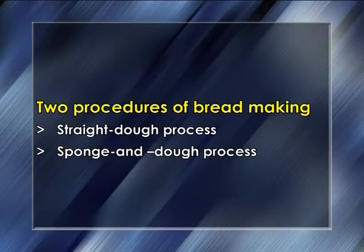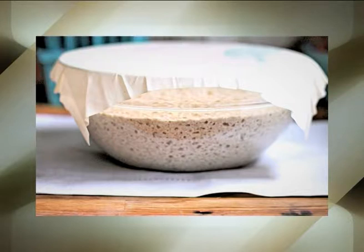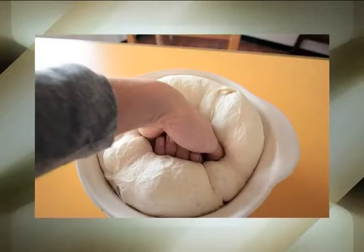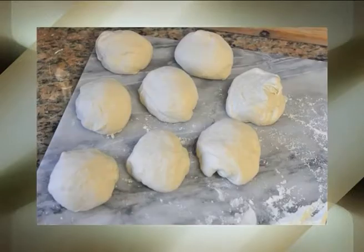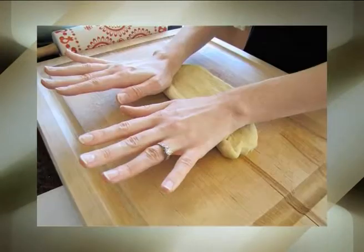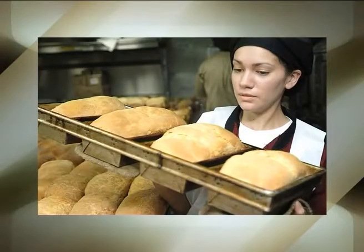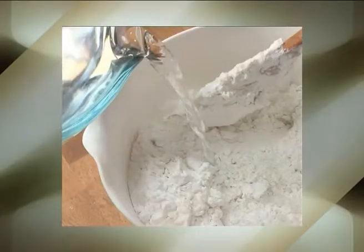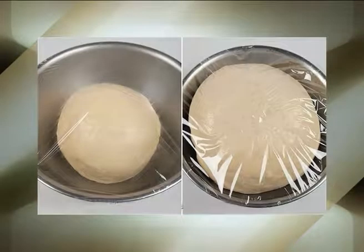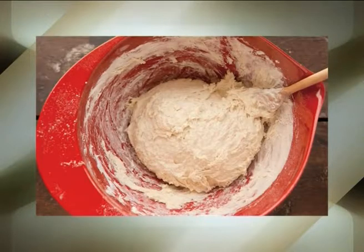There are two procedures of bread making. First, the straight dough process: all ingredients are mixed to develop the dough and allowed to ferment at 25 to 29 degrees Celsius. The dough is usually punched one or more times, then divided into loaf-sized pieces, rounded, molded into loaf shape, and placed into the baking pan. Second, the sponge and dough process: part of the flour, one-third of the water, and yeast are mixed to form a loose sponge, fermented for five hours, then combined with remaining ingredients, given 20 to 30 minutes intermediate proofing, divided, molded, and proofed.